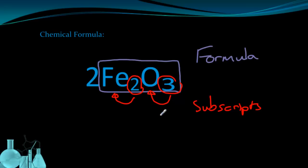So a formula, this formula in particular, tells us that there are two iron atoms chemically combined with three oxygen atoms to make this single molecule of rust.